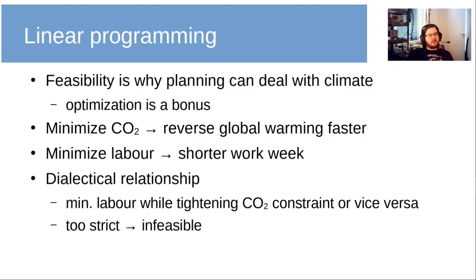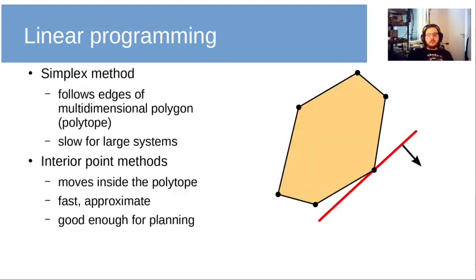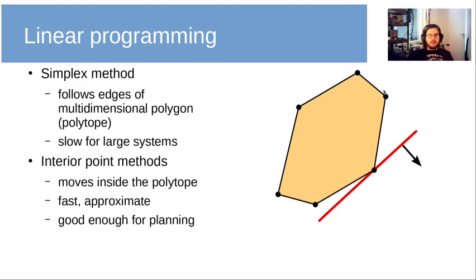So how do we solve these kinds of systems? There are basically two methods. The oldest one is the simplex method. If we look at this polygon, it represents some linear program — a system of linear inequalities we want to solve. In simplex, we move between corners: we go from here, to there, to there, and to there. This method of moving between corners of the polygon will eventually find the optimal solution, but it can be quite slow for large systems.